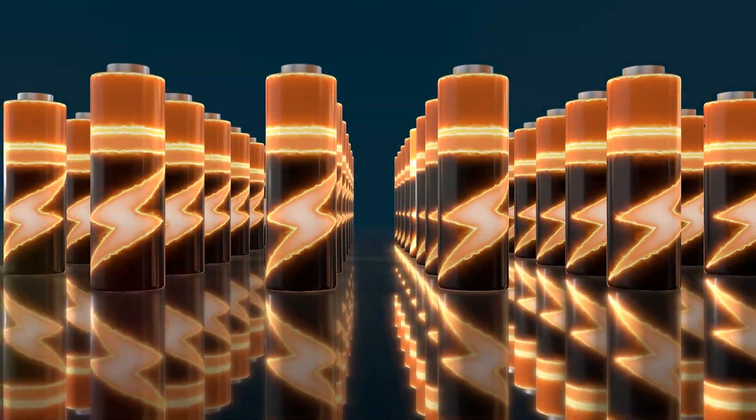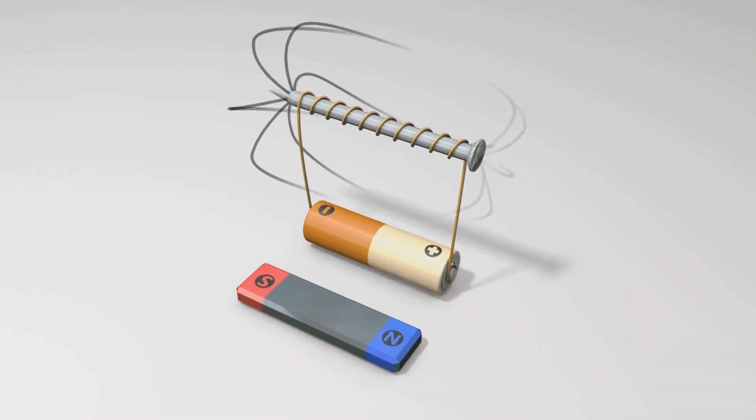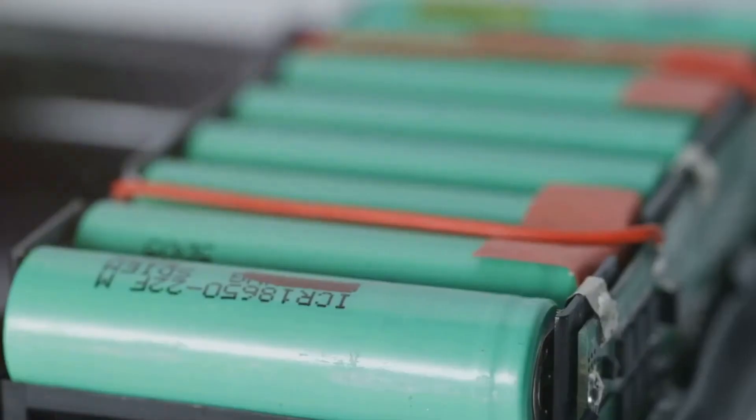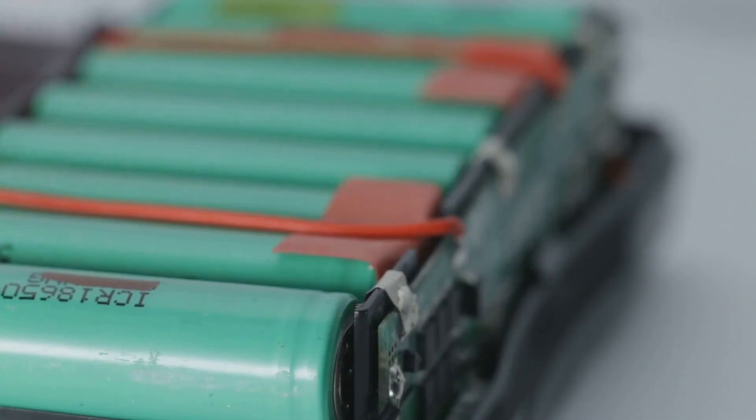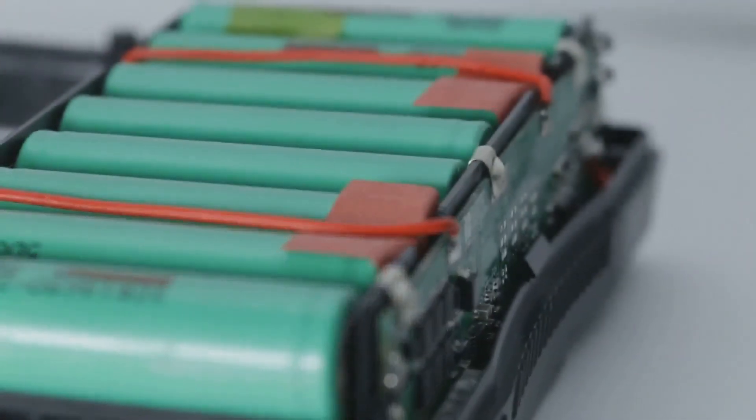Think of a battery: it has a positive (+) and negative (-) terminal. The voltage of the battery tells us the potential difference between these terminals and how much push it can provide to a circuit.